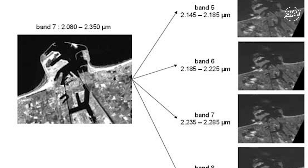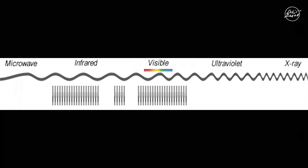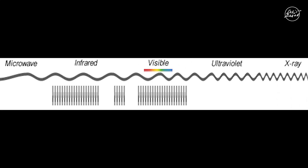Spectral resolution describes the amount of spectral detail in a band. High spectral resolution means its bands are more narrow, whereas low spectral resolution is broader bands covering more of the spectrum.